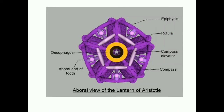So, Aristotle's lantern is made up of five epiphysis, five rotule, five compass or radii, five pyramids, five teeth, and five epiphysis. All five components are seen in the aboral view.